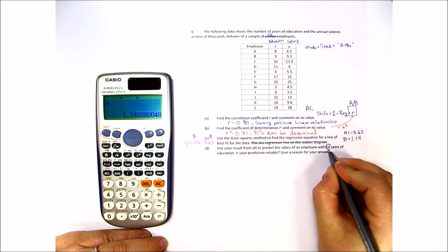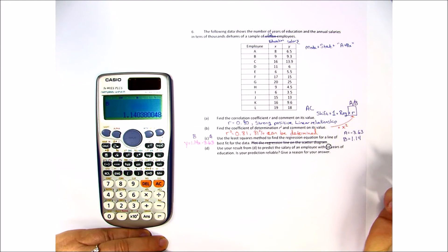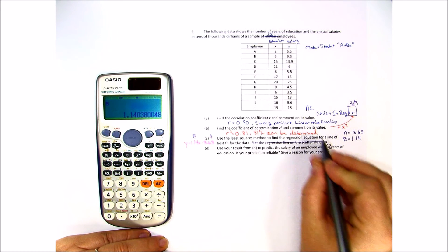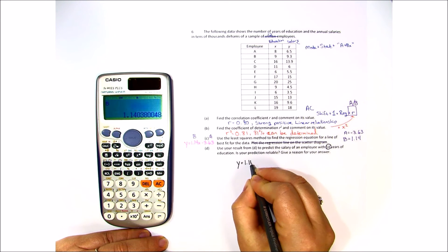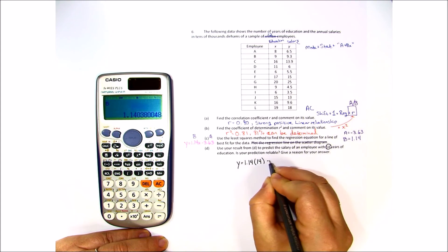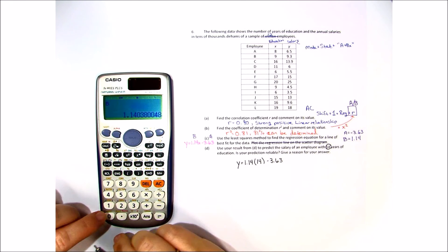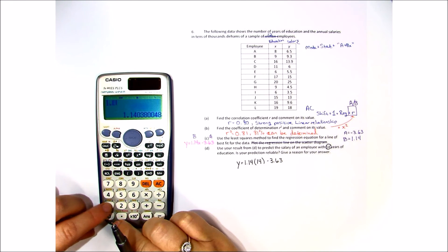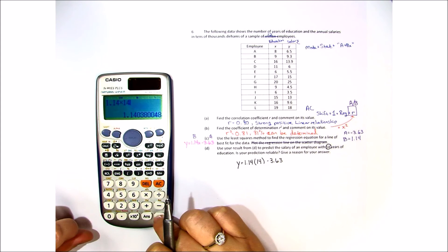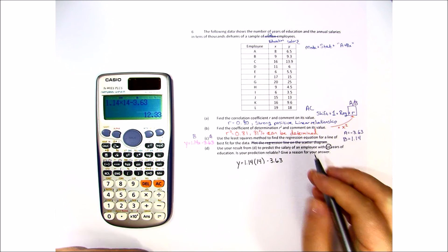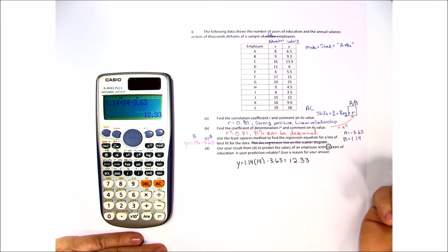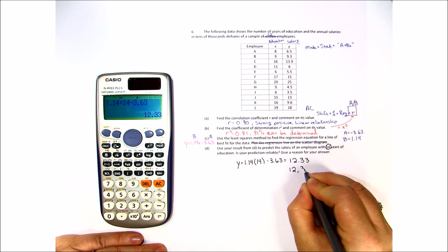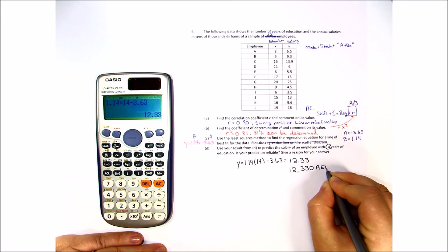Use the result from d to predict the salary of an employee with 14 years of education. Is your prediction reliable and give a reason. Well, 14 years of education is our x coordinate so we're going to do y equals 1.14 times 14 minus 3.63. So let's go ahead and plug that in 1.14 times 14 minus 3.63 and I get that they should be making about 12.33 in thousands. In other words, they'll be making 12,330 dirhams a month.